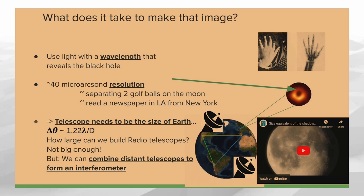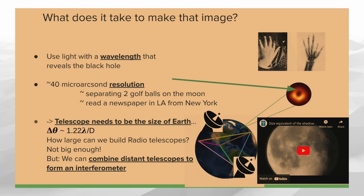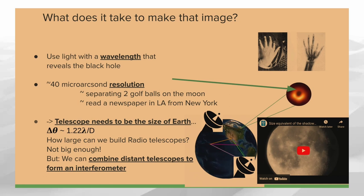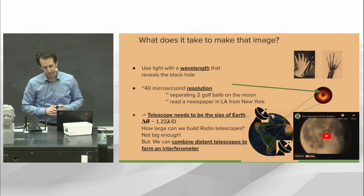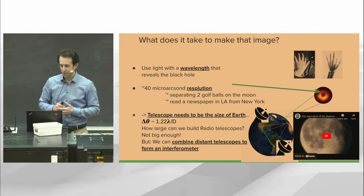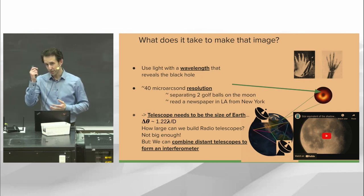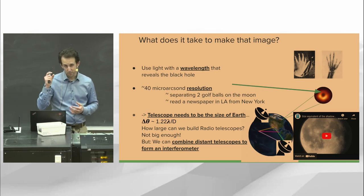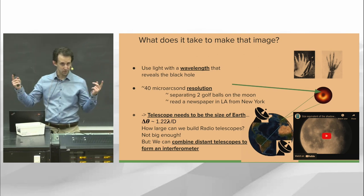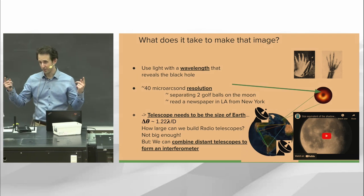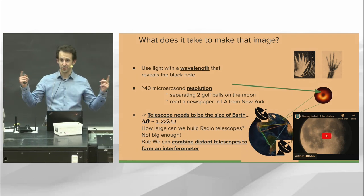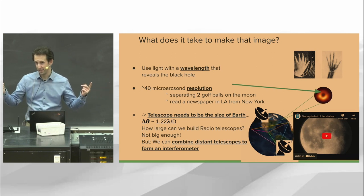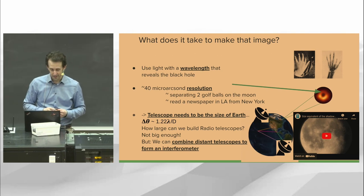You can circumvent the difficulties of building a large radio dish by connecting signals from various existing radio telescopes around the planet, observing the source coherently at the same time and recording the data. If you do that right, you can generate an image from that data. The resolution you get is no longer determined by the diameter of a single telescope, but by the distance between telescopes — the further apart they are, the higher the resolution. While you cannot build a telescope the size of Earth, you can certainly place two radio telescopes that far apart, giving us our enormous resolution of 40 microarcseconds.